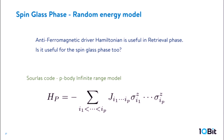The final part considers the XX term in the spin glass phase, not in the context of nested quantum annealing correction. We looked at how the XX term is useful to improve computation outside the spin glass phase. Now we want to know if this feature still survives in the spin glass phase.